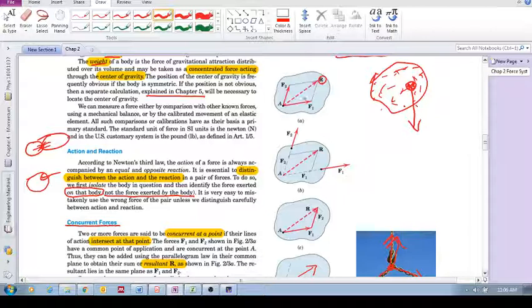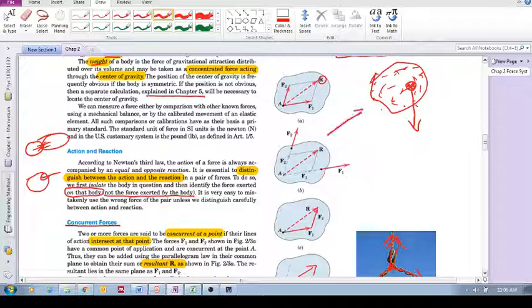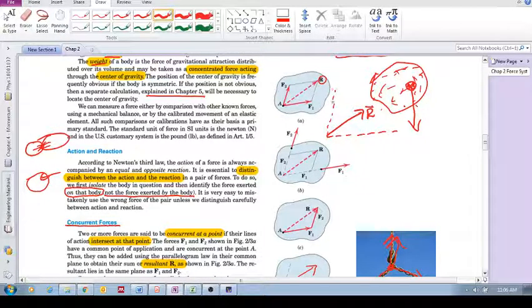Well in the same way that we can add up these forces using vector addition, using the parallelogram method to get a vector sum, we can also do the reverse. If we have a vector sum R and we would like to know what are the components along those two lines, we can also use the parallelogram method.